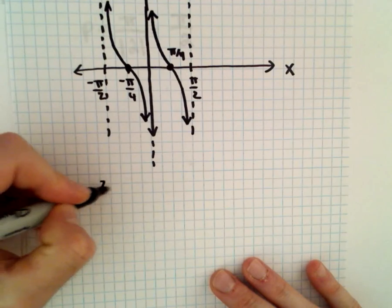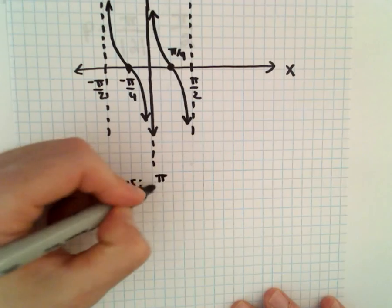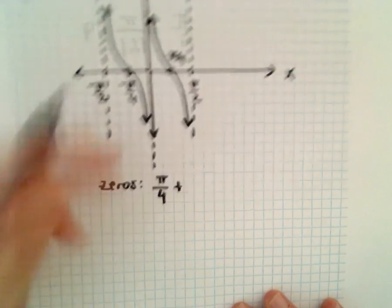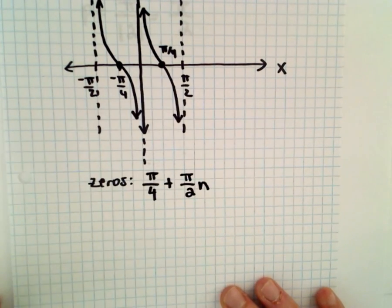The zeros—the first positive zero is at pi over 4, and then we said the period is pi over 2, so we'll move over multiples of pi over 2 to get the zeros.